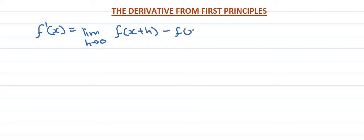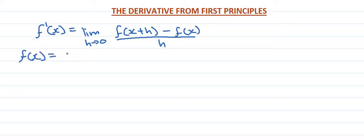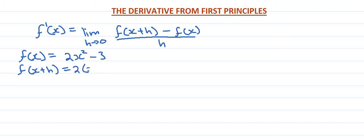f of x. All over h — so we use the differentiator formula. So from first principles, f of x is given as f of x equals 2x squared minus 3. For f of x plus h, we replace x with x plus h, so x becomes x plus h — all squared minus 3.